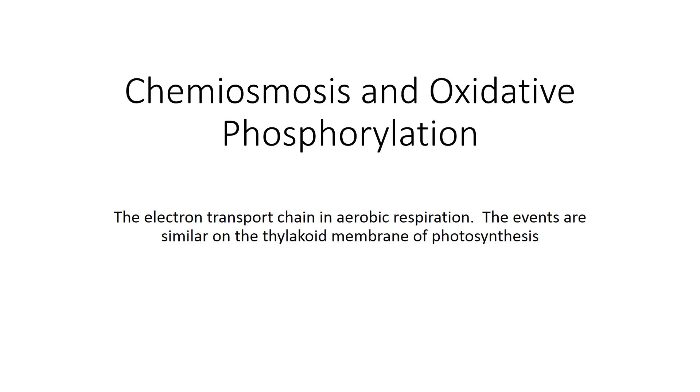You can also look at the videos I've made on those particular parts of aerobic respiration. This is sometimes called the electron transport chain, and a similar process happens in the thylakoid membrane of photosynthesis, but I'm just going to be dealing with what happens inside the mitochondria with respiration.